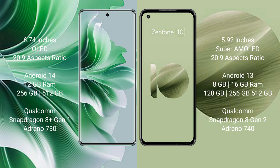Oppo Reno 11 Pro runs on the Android 14 operating system. Asus Zenfone 10 runs on the Android 13 operating system. Oppo Reno 11 Pro comes with 12GB RAM and 256GB internal storage, Qualcomm Snapdragon processor, and GPU Adreno 730. Asus Zenfone 10 comes with 8GB or 16GB RAM and 128GB or 256GB internal storage, Qualcomm Snapdragon processor, and GPU Adreno 740.